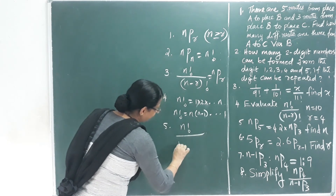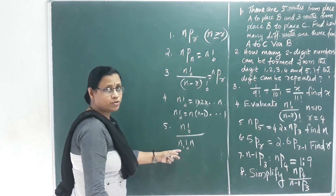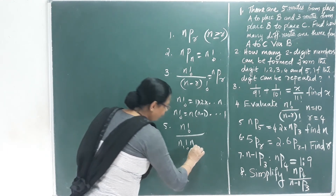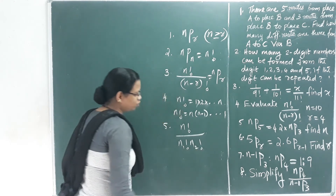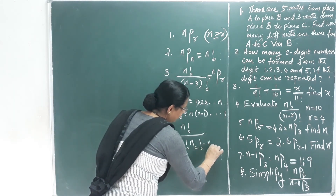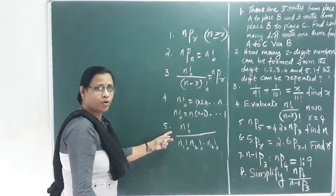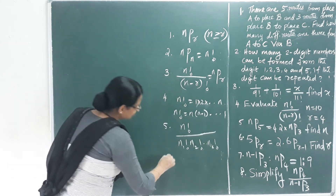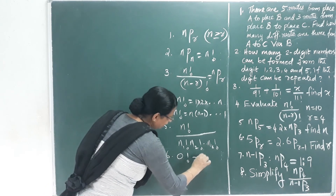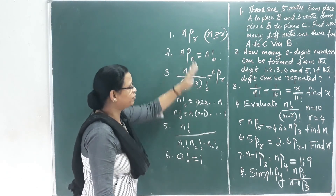If there is repetition, the formula is n factorial divided by the factorial of repeated letters: n1 factorial, n2 factorial, up to nk factorial. Also, 0 factorial equals 1. That is the main formula we have done.